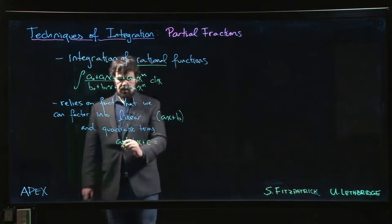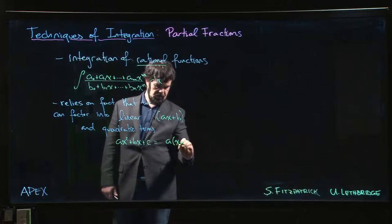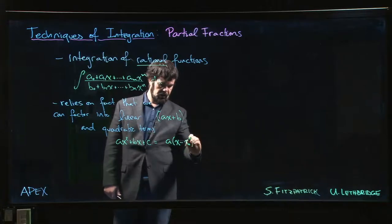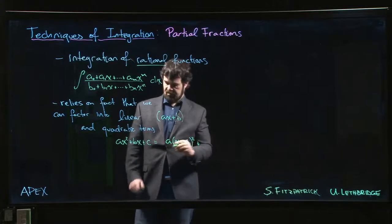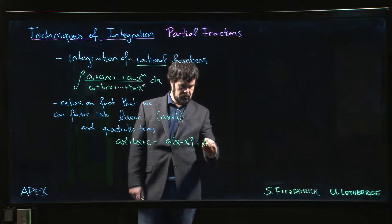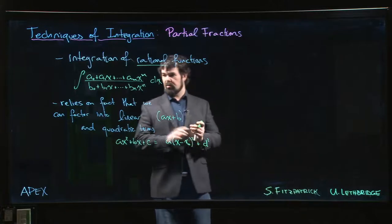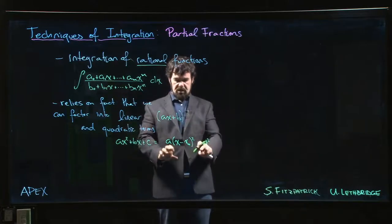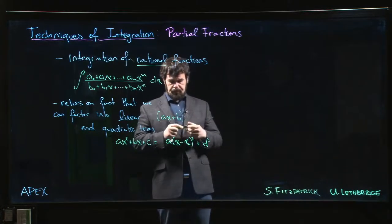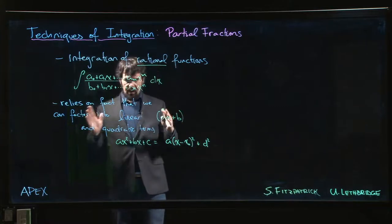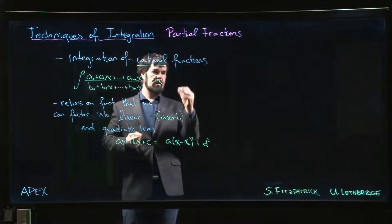So typically if it's an irreducible quadratic, when we complete the square we expect that we get something that's going to look like a times (x minus some x₀)² plus some other number squared. So typically we factor the denominator into linear and quadratic terms. We break it down completely as far as we can, and we try to split things up so that we have one term for each factor.